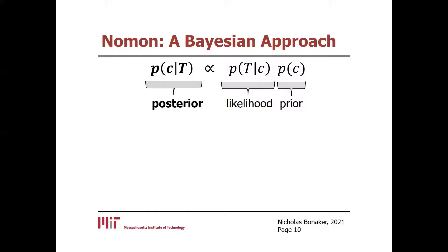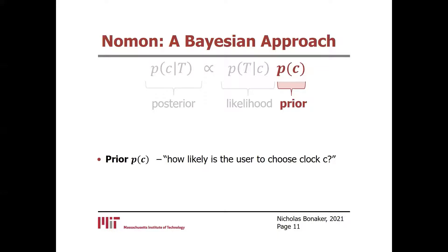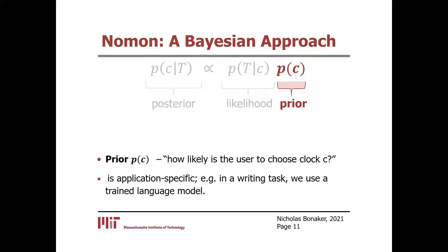NOMON employs a Bayesian selection method. This method is the basis of how NOMON allows arbitrary ordering of options, compensates for noise in switch inputs, and scales efficiently with large numbers of options. The goal is to predict which clock C the user wants to select, given their observed click times t. We do this by finding the clock C that maximizes the posterior probability and is above a certain threshold. We calculate this using Bayes' rule, starting with the prior distribution — a measure of how likely the user is to choose clock C. Priors are often application-specific. For example, in a keyboard application with NOMON, we use a language model to determine how probable the next character is given what the user just typed. If the user has written H-E-L-L, the probability that the next letter is an O is much higher than a W.